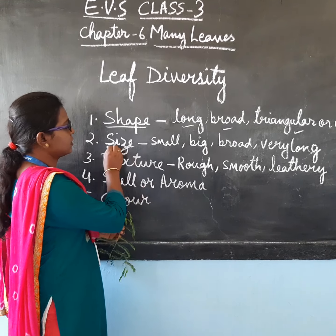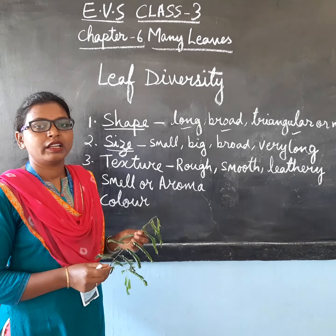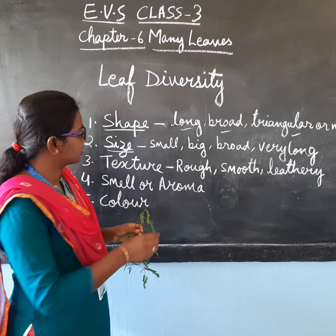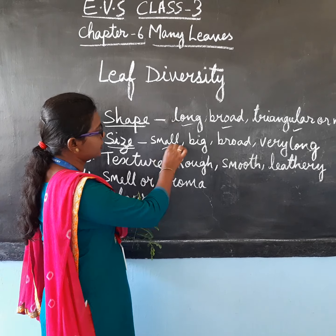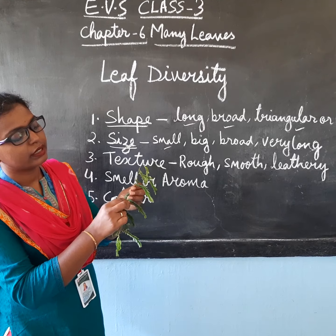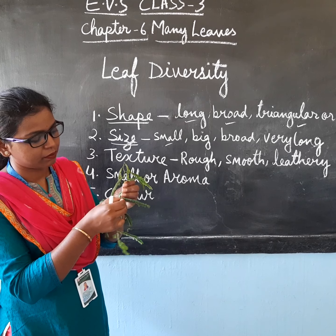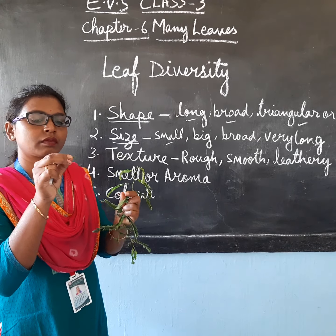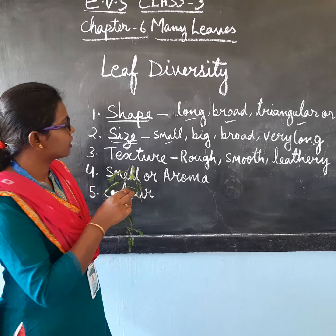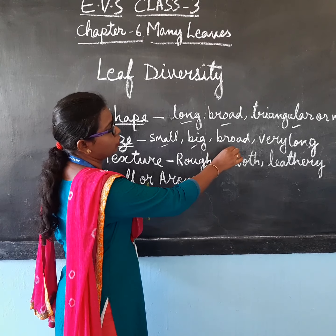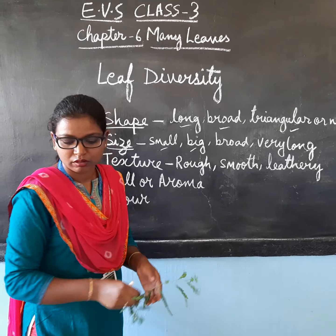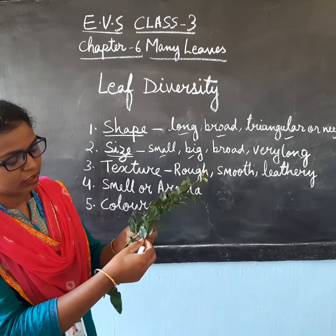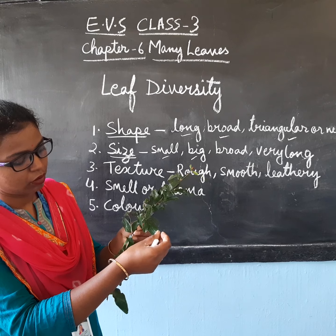Second is size. Leaves vary in different sizes. Some leaves are small — you can see here, it is a very small leaf. Then some leaves are big, broad and very long. You can see here, this one is a little more big.